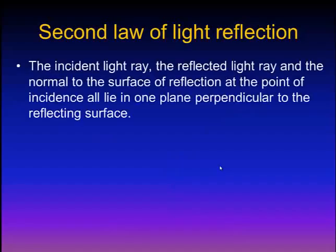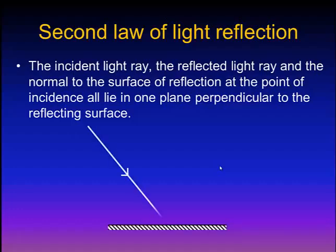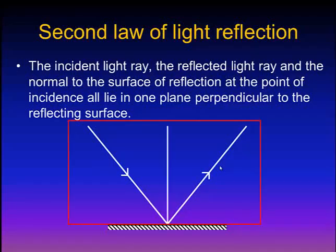The second law of light reflection states that the incident light ray, the reflected light ray, and the normal to the surface of reflection at the point of incidence, all lie in one plane perpendicular to the reflecting surface.